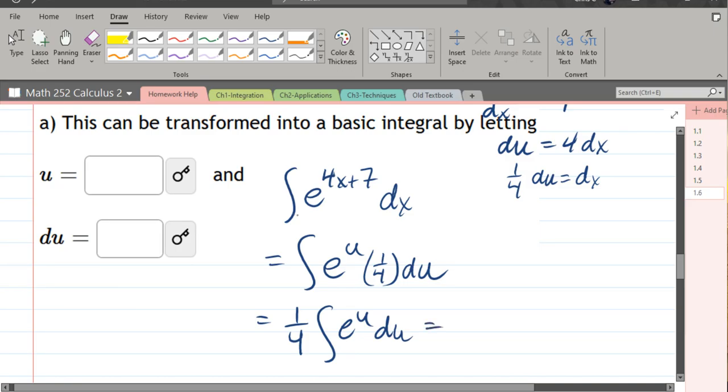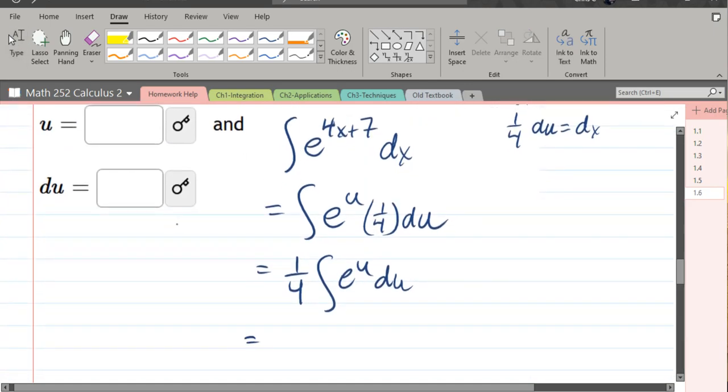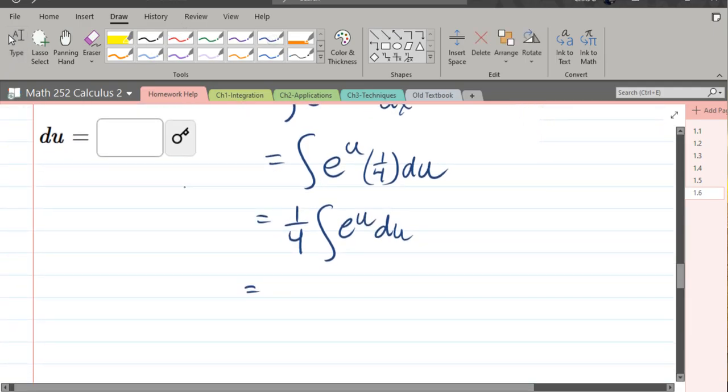This problem doesn't say integrate but I'm going to go ahead and get crazy here and integrate this. This is actually the easiest integral. Now you're looking at my 4 looks just like my u. That's not good. You need to have a good math font. So we got 1 fourth. Antiderivative e to the u is e to the u. And then unsubstitute e to the 4x plus 7 plus c.